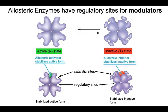In allosteric catalytic enzymes there is always the catalytic site, and notice the catalytic site looks different whether the enzyme is in the inactive form or the active form. There is also a new site — the regulatory site. The catalytic site binds to the substrate, while the regulatory site binds to something called modulators.